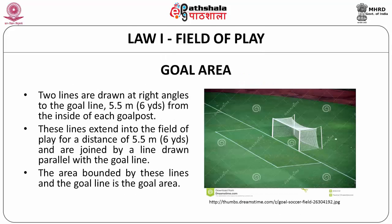The goal area: two lines are drawn at right angles to the goal line, 5.5 meters from the inside of each goal post. These lines are extended into the field of play for a distance of 5.5 meters and are joined by a line drawn parallel with the goal line. The area bounded by these lines and the goal line is the goal area.